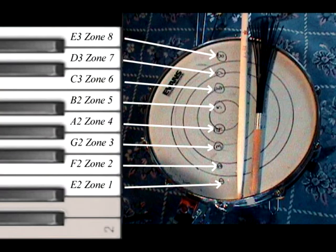A unique feature of our drum library is our use of positional zones. All the snares, toms and cymbals, hi-hats were sampled using positional zone information.